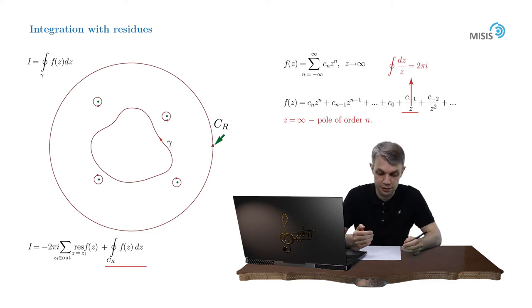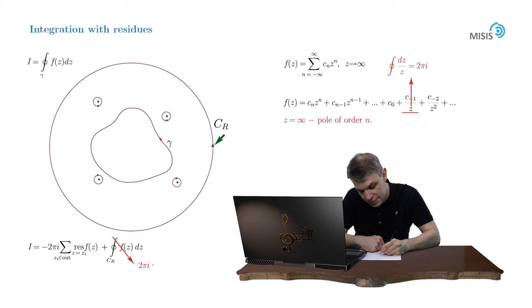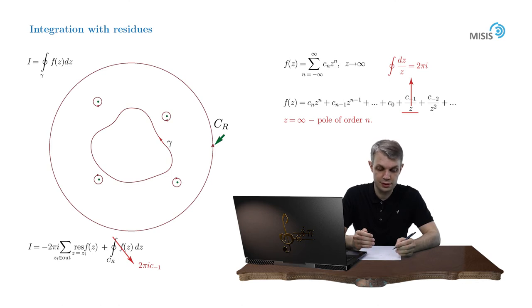So in the end, our integral along this large circle will be equal to 2πi times c_{-1}. And so we have quite an interesting result. Our integral is equal to minus 2πi times the sum of the residues of the function outside this contour plus 2πi times this expansion coefficient c_{-1} at infinity.